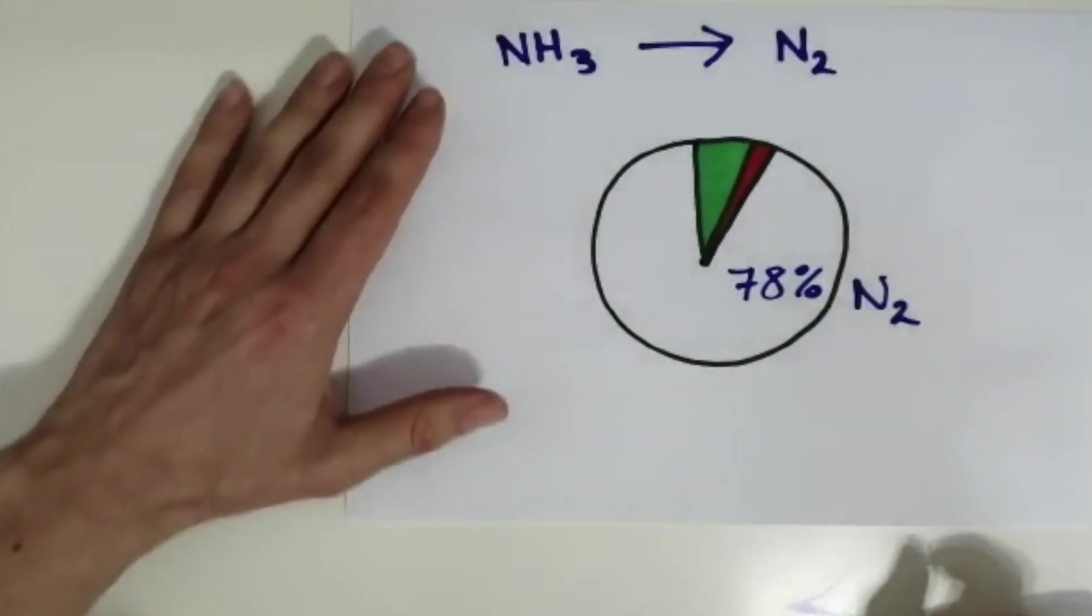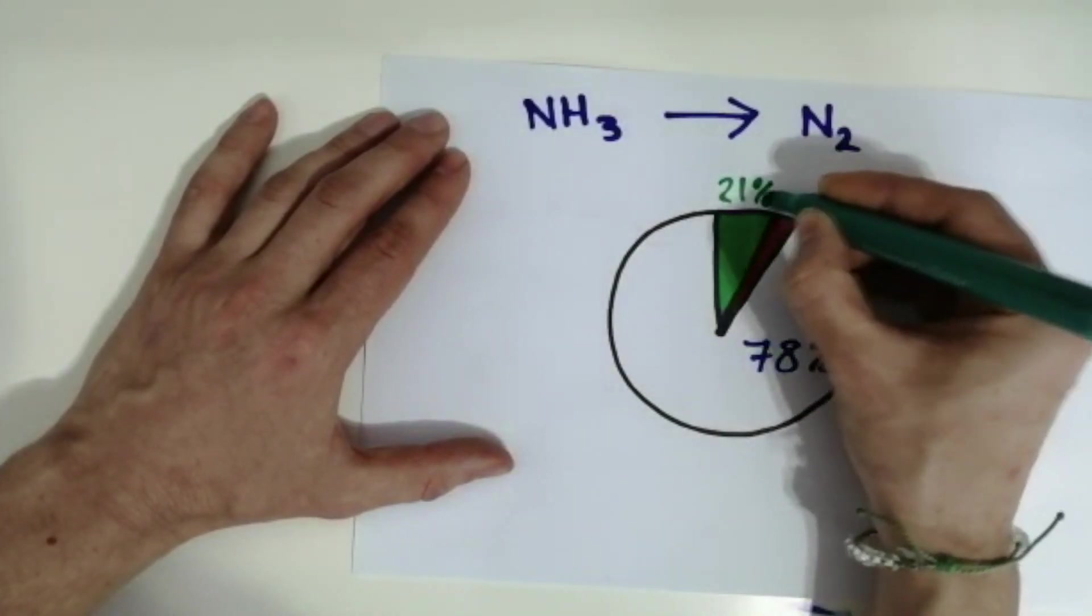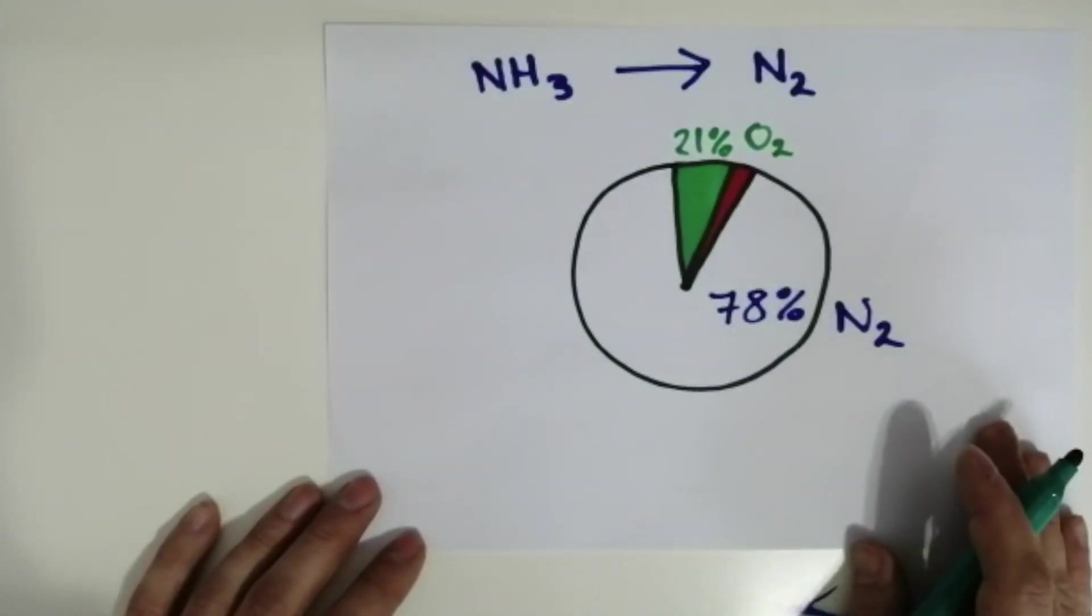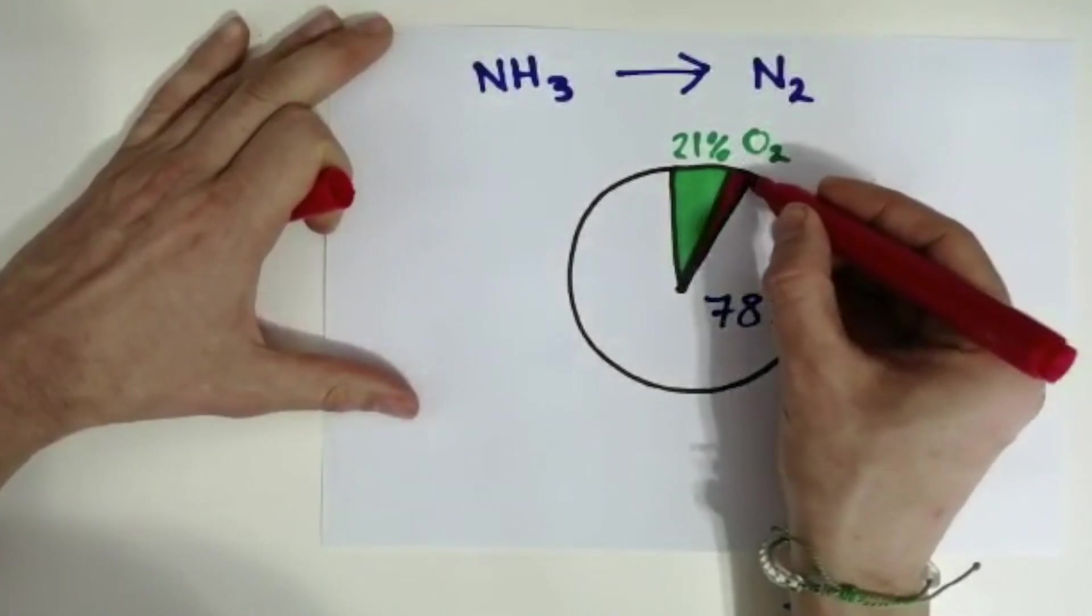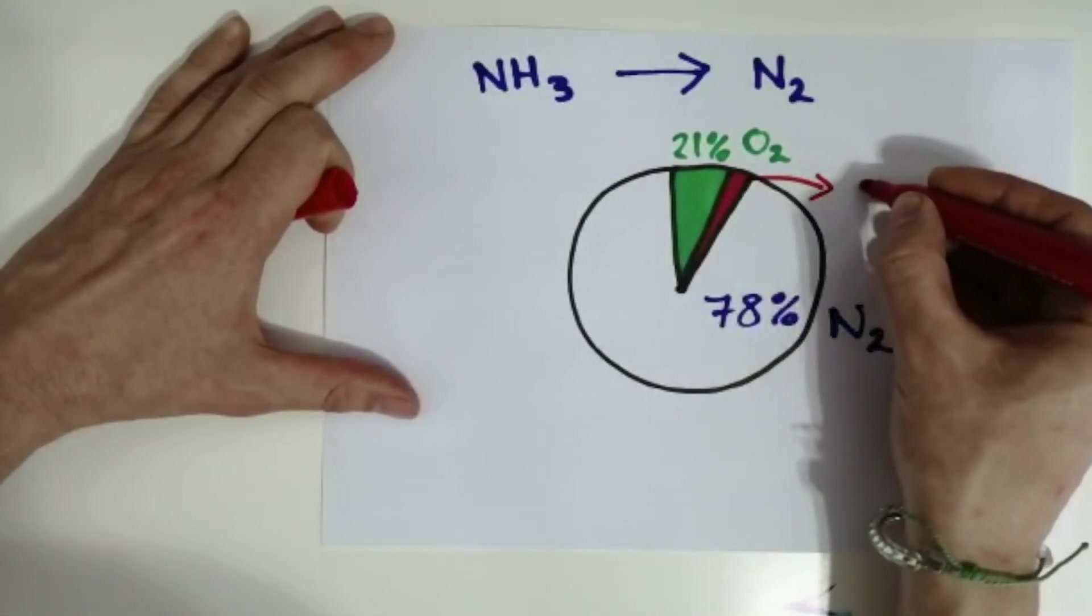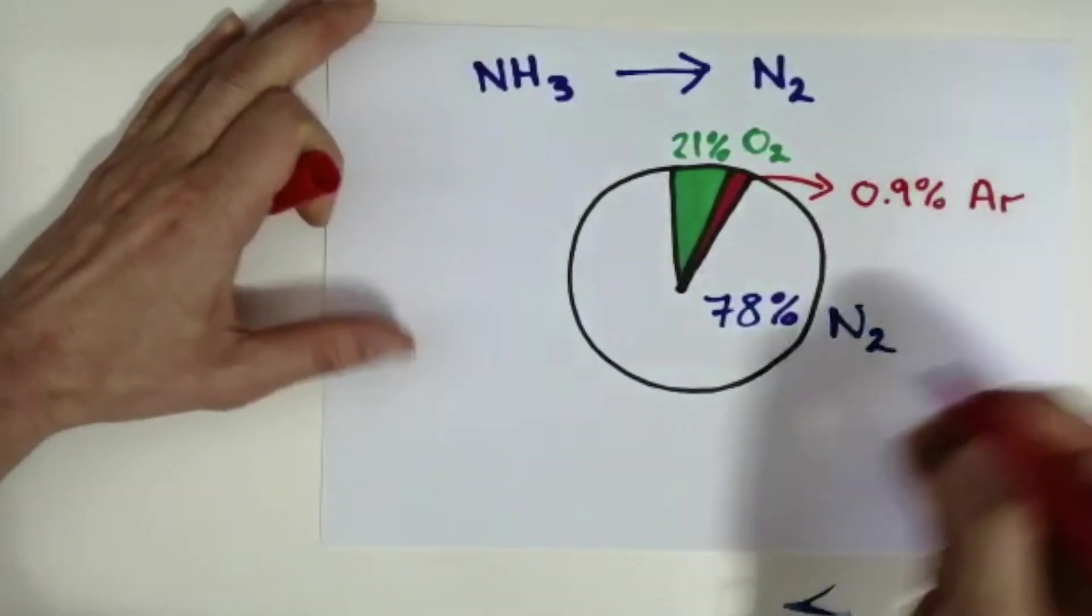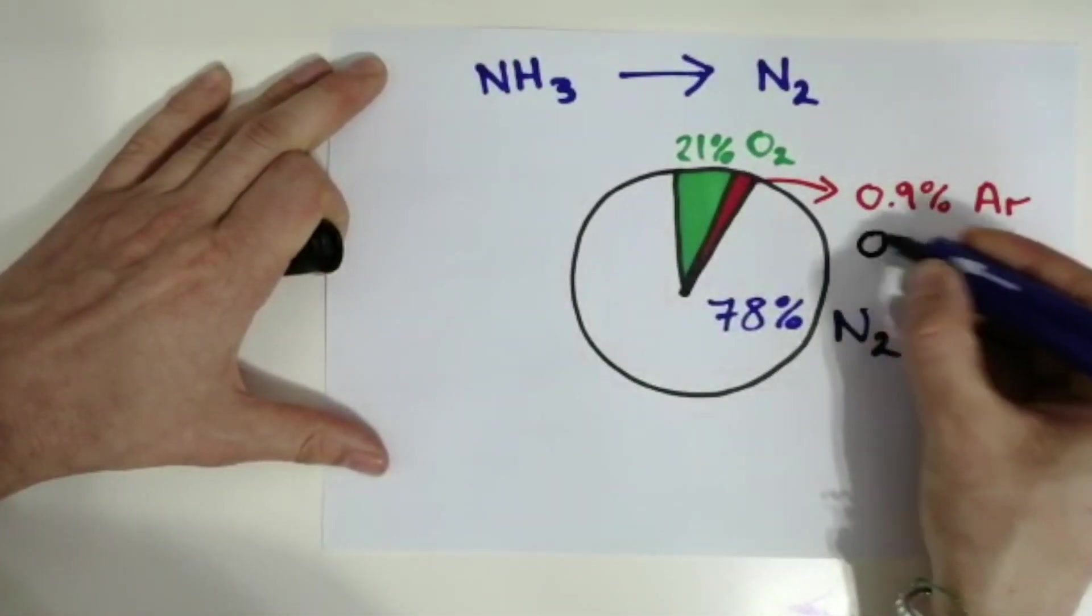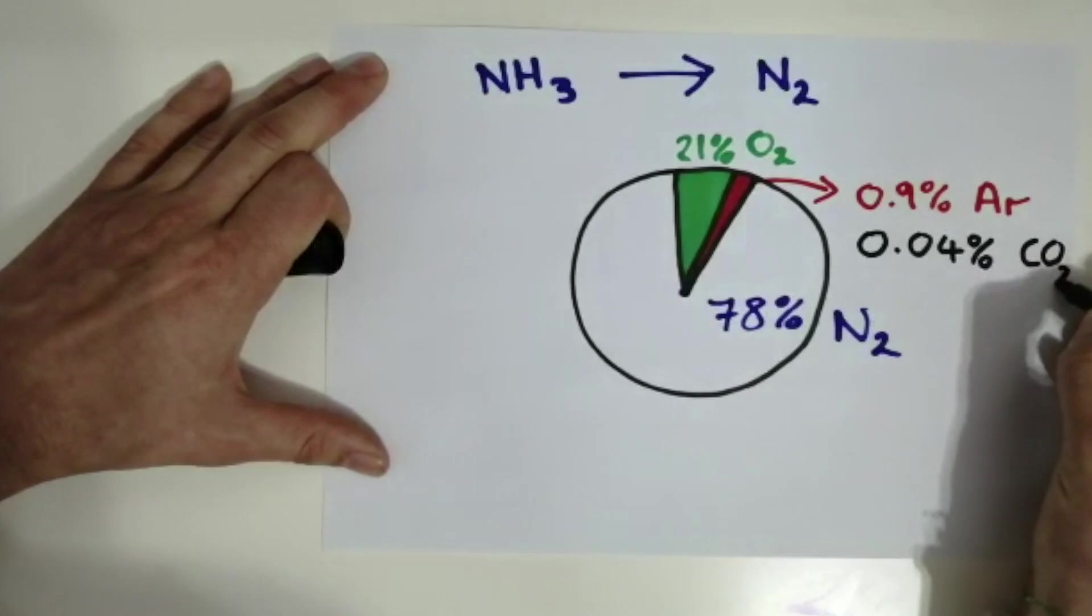Nitrogen is diatomic, so we write N2 because in our atmosphere we don't have single nitrogen atoms, but we have nitrogen molecules. We have 21 percent oxygen, which again is diatomic, so we write O2. We don't have single oxygen atoms floating around, we have molecules of two oxygen. And the red sliver there is not carbon dioxide. The red sliver is that we have very small amounts, 0.9 percent argon gas. And actually the amount of carbon dioxide in the atmosphere now is 0.04 percent carbon dioxide CO2.